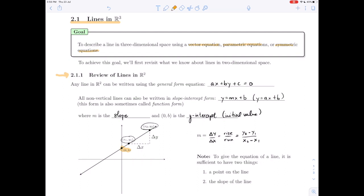I want to point something out here, and that is to give the equation of a line, it's sufficient to have two things. In our example, the two things that we had were a point on the line and the slope of the line.